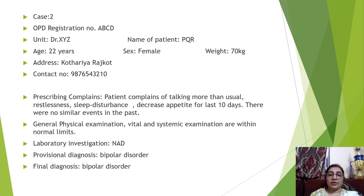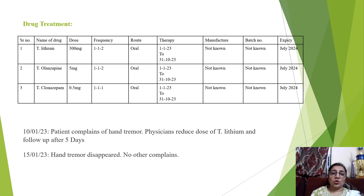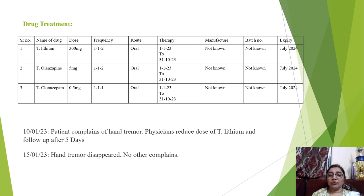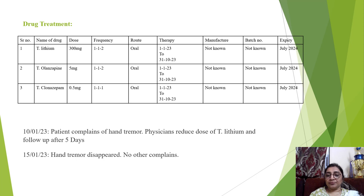Case study: patient details include registration number, unit number, name, age, sex, weight, address, and contact number. The presenting complaint was talking more than usual, restlessness, sleep disturbance, and decreased appetite for 10 days, with no similar events in the past. Vitals and systemic examination were within normal limits. Provisional and final diagnosis was bipolar disorder. The patient was prescribed lithium, olanzapine, and clonazepam at various doses, frequencies, and routes for one month.